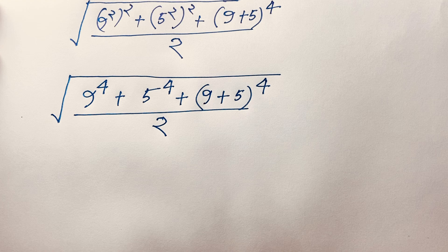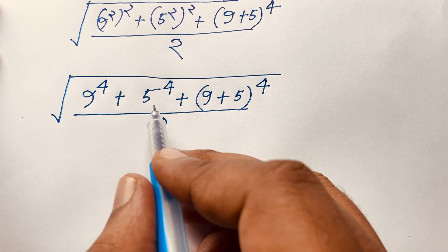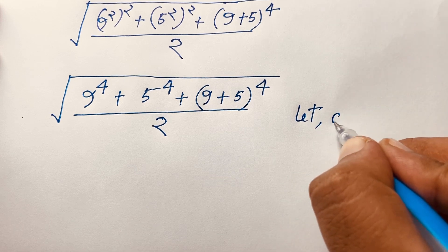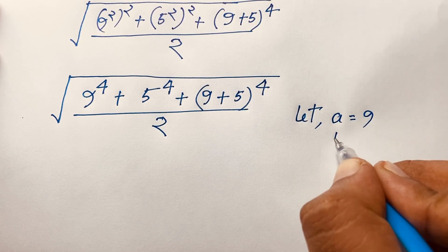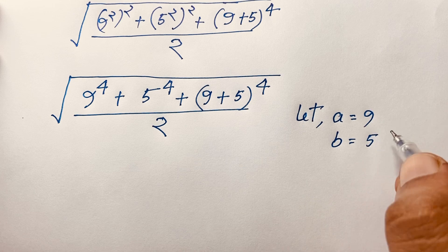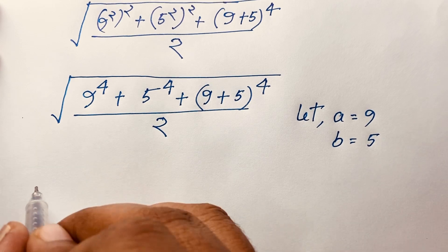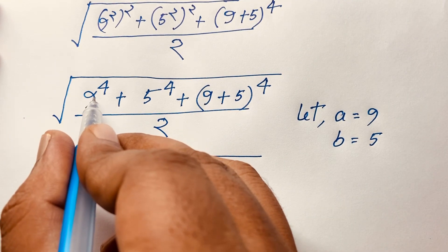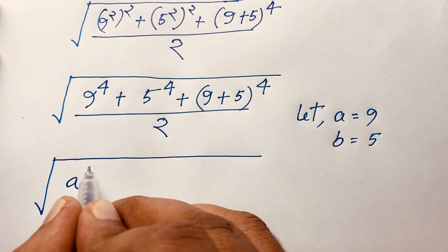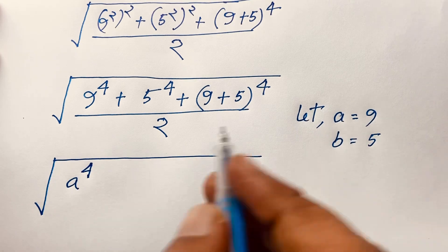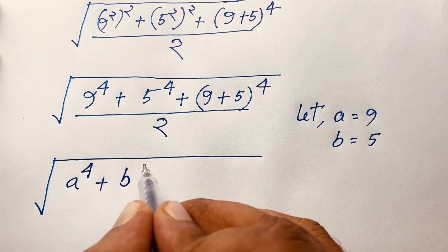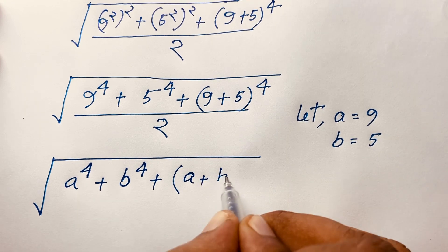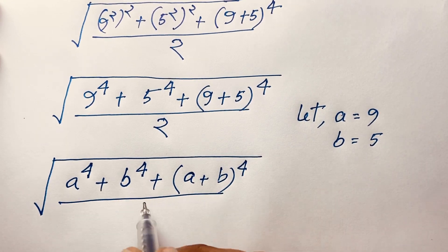Now we see the numbers 9 and 5 appearing repeatedly. Let us suppose that a equals 9 and b equals 5. With this substitution, the expression under the square root becomes a to the power 4 plus b to the power 4, plus a plus b whole to the power 4 over 2.